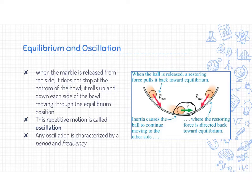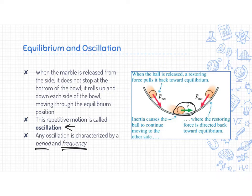This repetitive motion is called an oscillation. So the marble oscillates back and forth. When you did the lab, the pendulum was oscillating back and forth, and the vertical hanging mass was oscillating up and down. To characterize and explain what's going on with oscillations, we look at the terms period and frequency, which we saw earlier when we talked about uniform circular motion.